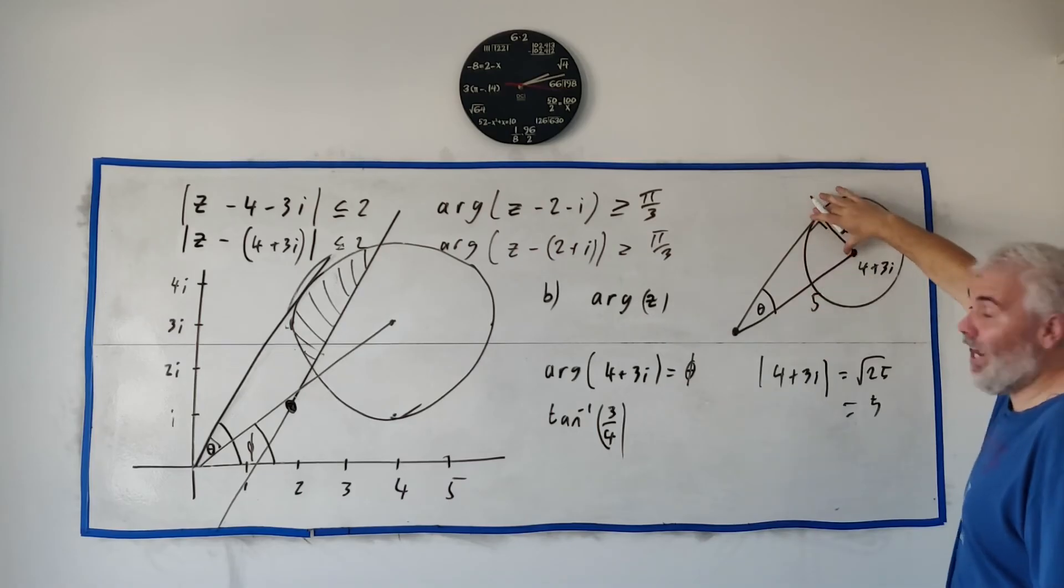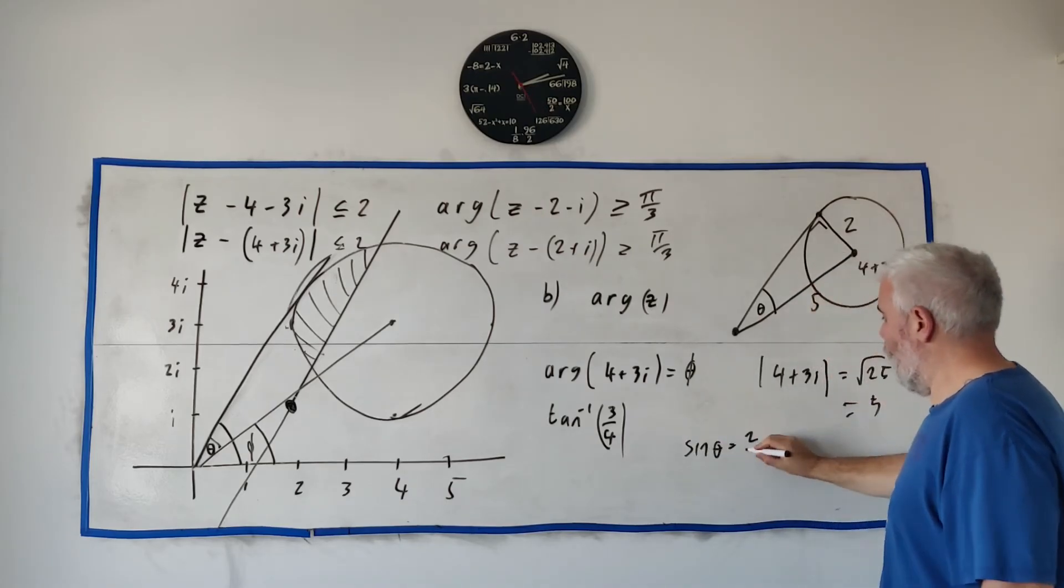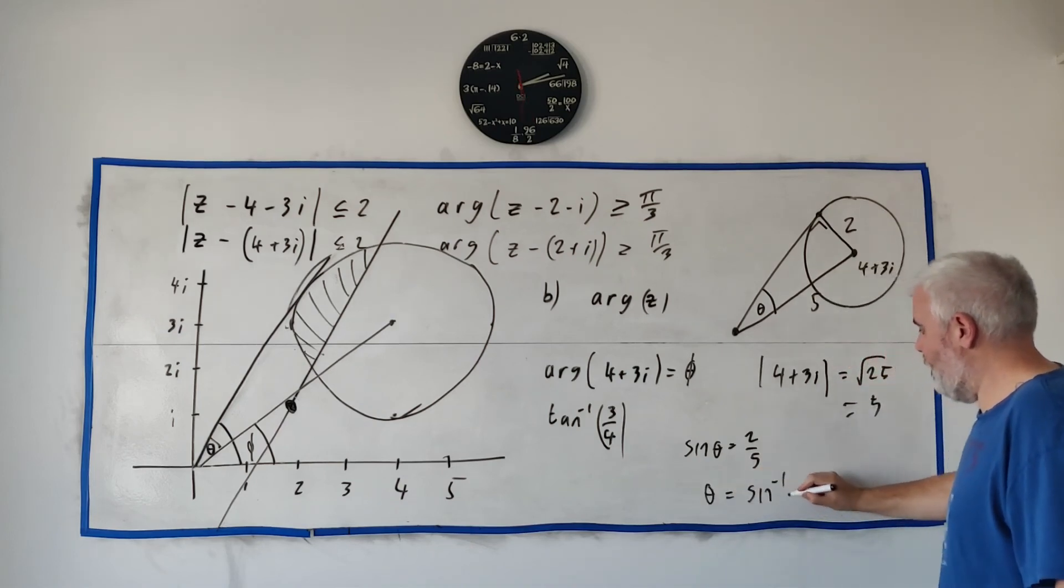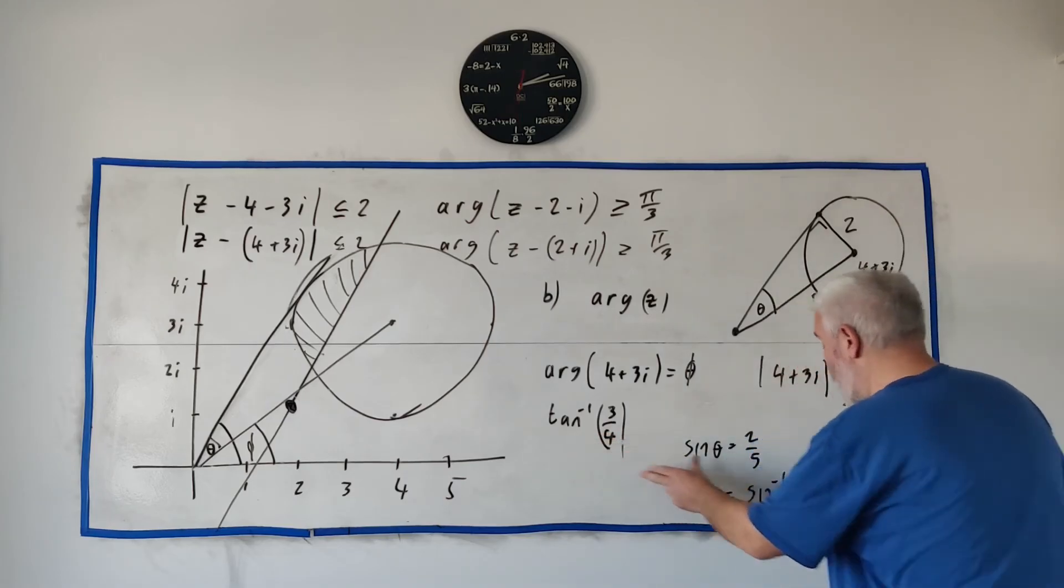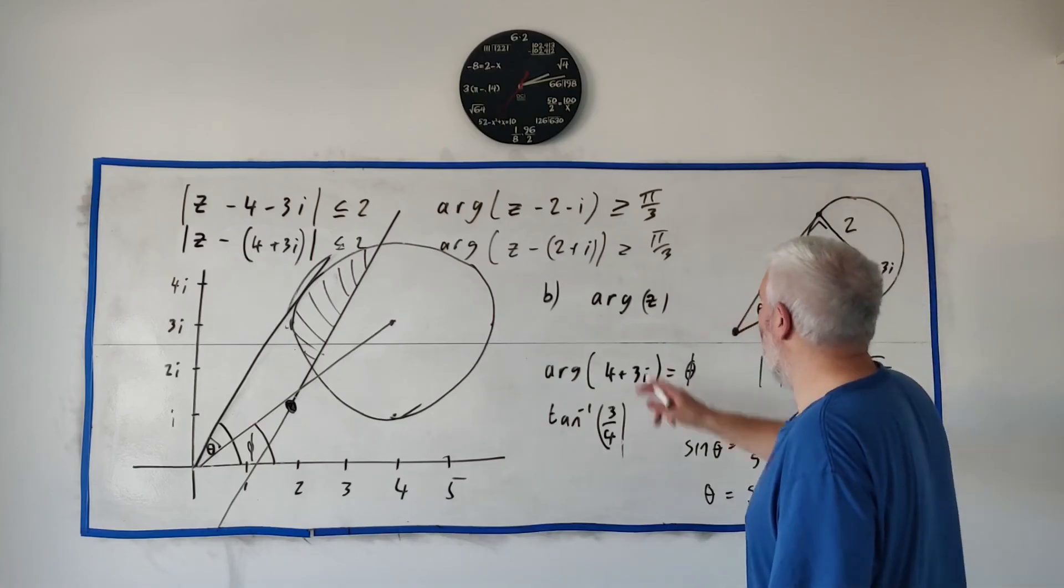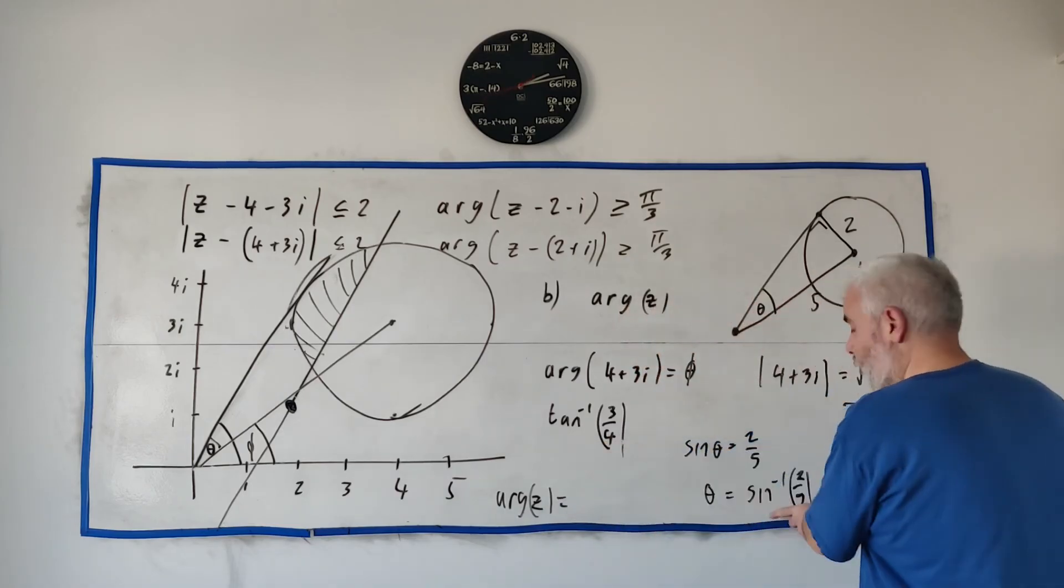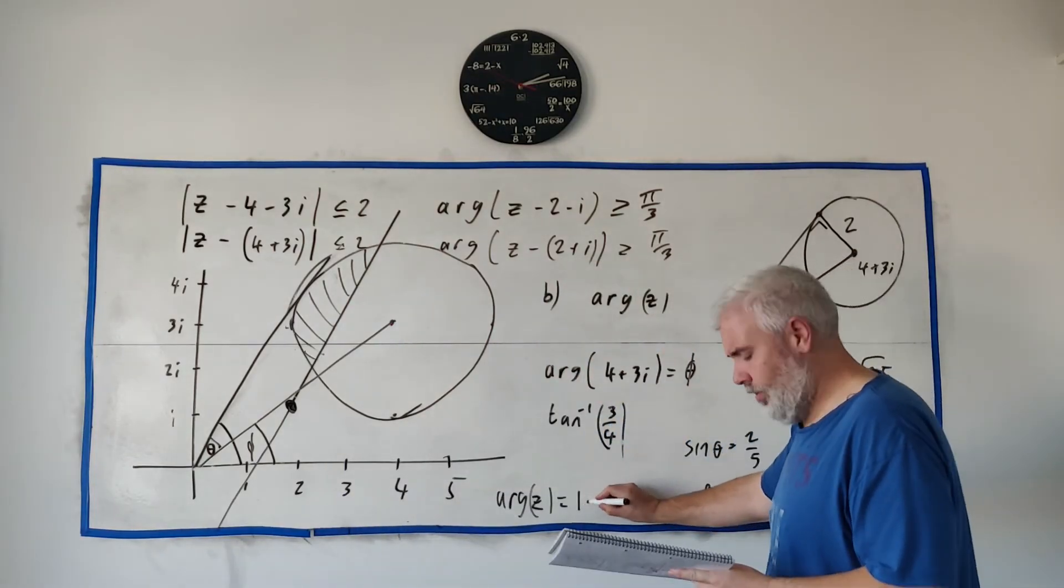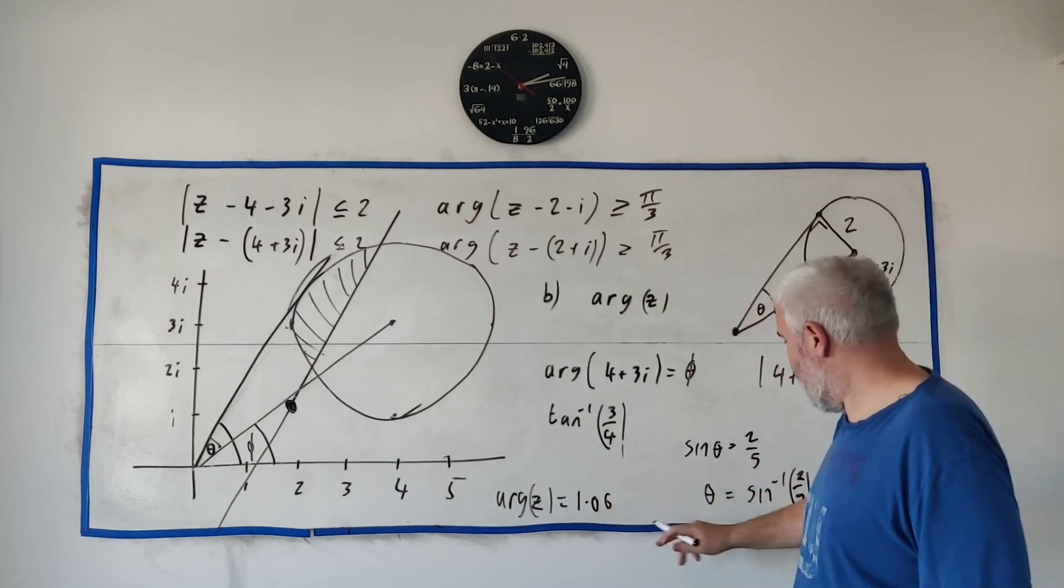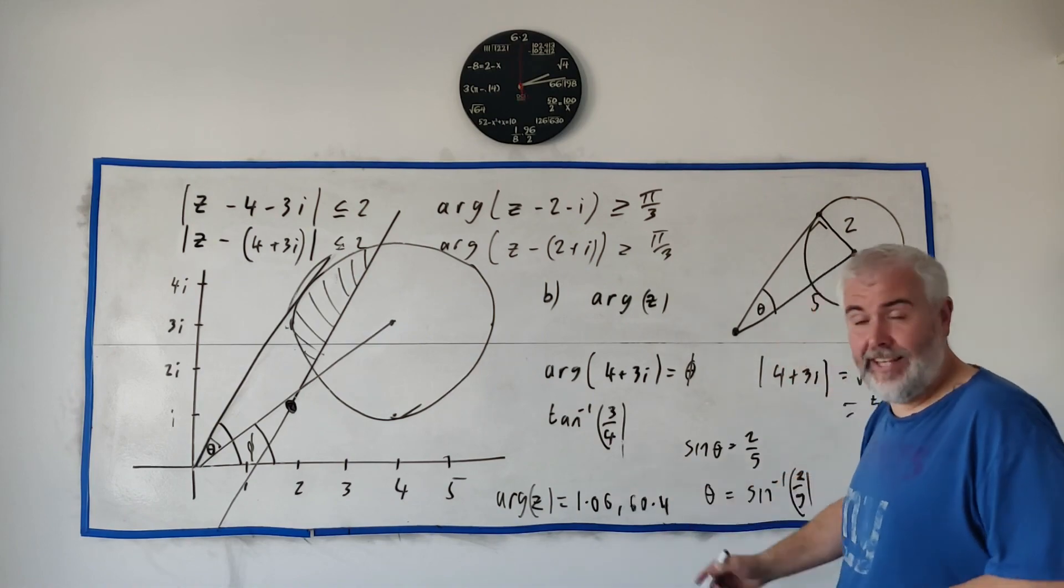The answer we're looking for is this number plus this number. The total, the argument, the maximum argument of z is just equal to this plus this. If you put that into a calculator, they don't tell you to do it in radians or degrees. So that's the answer in radians. Again, this number plus this number or perfectly okay as well as 60.4 is the answer in degrees.